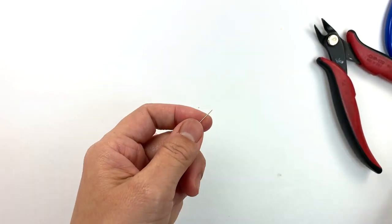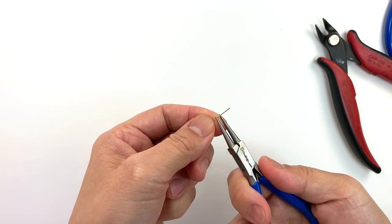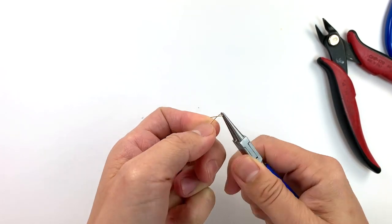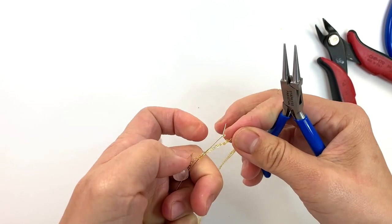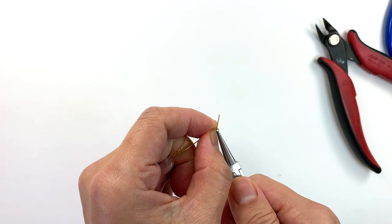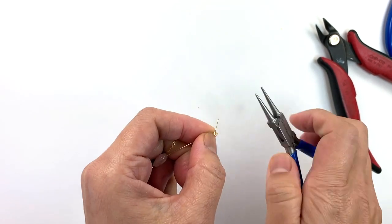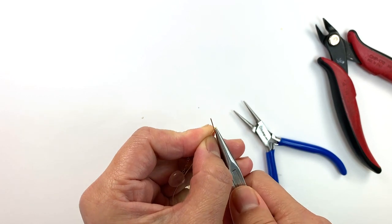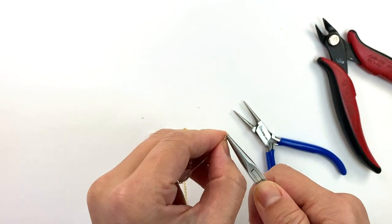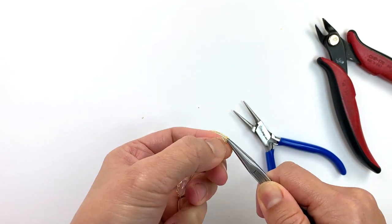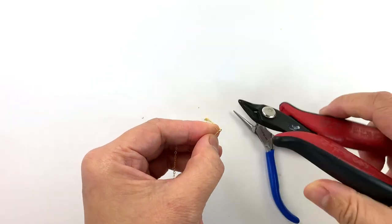Then I'm going to use my round nose pliers to make a loop like this and slide this across this way so it's in the loop. I'm going to switch to the chain nose pliers. The other one is round nose. This is chain nose because I have a very strong grip.